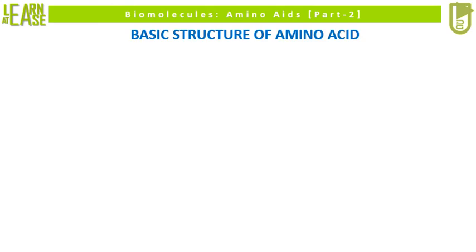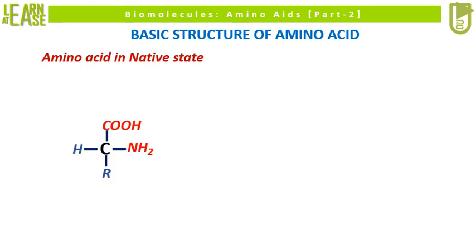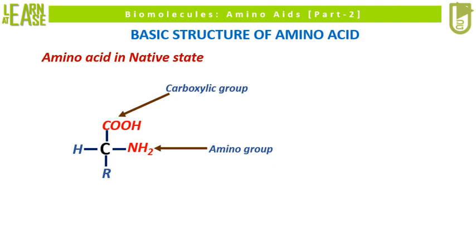I will start by showing you the basic structure of amino acid. The basic structure of an amino acid is shown in the image. The four vacancies on a single carbon atom — C1 of amino acid — are occupied by the amino group, carboxylic group, a proton, and the R group. This carbon atom is known as the alpha carbon.